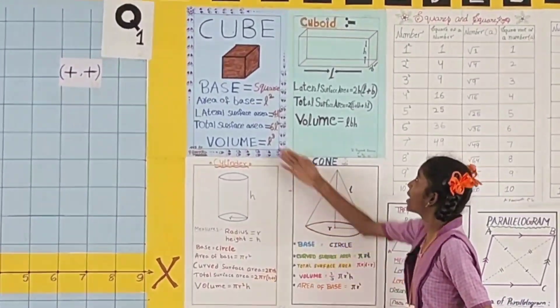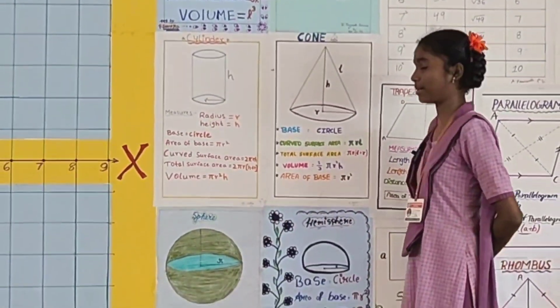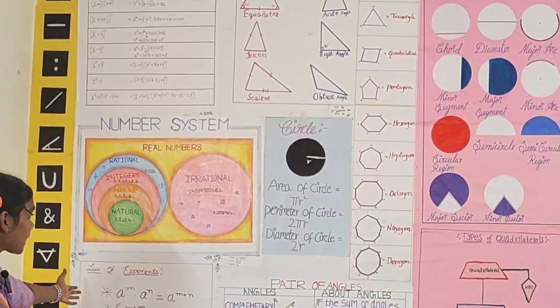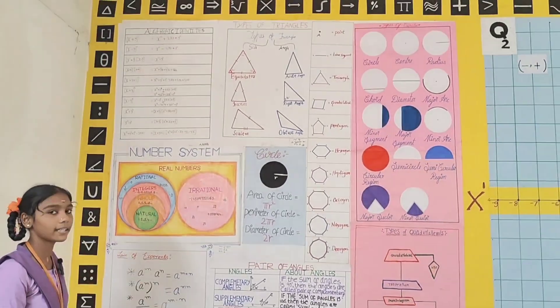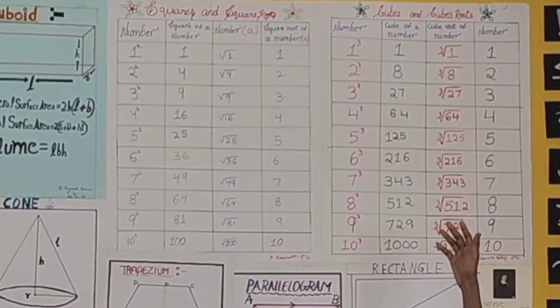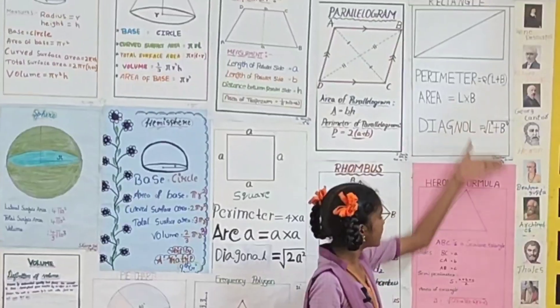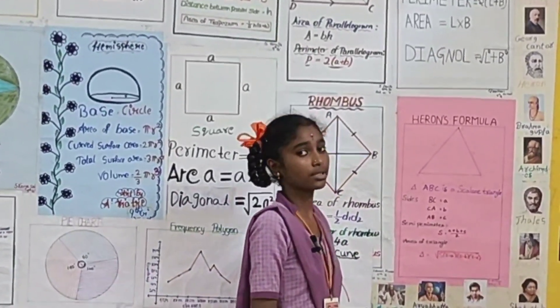These are three-dimensional figures: cube, cuboid, cylinder, cone, sphere, hemisphere. These are number systems, laws of exponents and algebraic identities. These are square and square roots and cube and cube roots of the numbers. These are special numbers in mathematics. These are all mathematicians' photos.